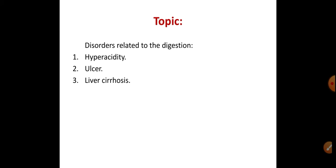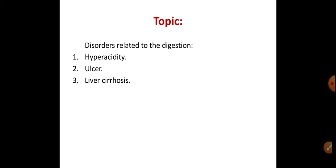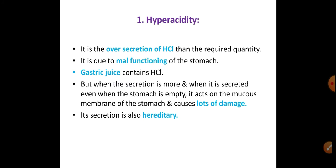In this part, we will cover three disorders: first hyperacidity, then ulcer, and third liver cirrhosis. You will study what each disease is, its symptoms, causes, and treatment. Hyperacidity is the over-secretion of HCL — hydrochloric acid. Gastric juice is secreted from the lining of the stomach and HCL helps in digestion. Here, more than the required quantity of HCL is secreted, which increases the concentration and causes a condition called hyperacidity.